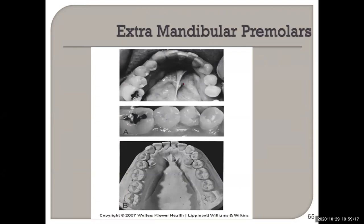Mandibular premolar supernumerary teeth can be a periodontal nightmare — how are you going to floss and clean? So if you're going to have an extra tooth, it's obviously better to have them in alignment.